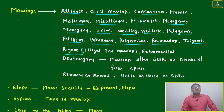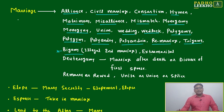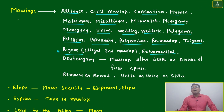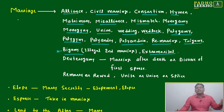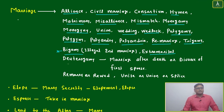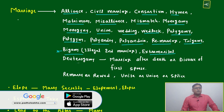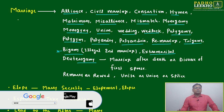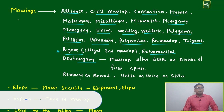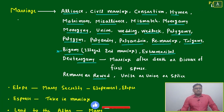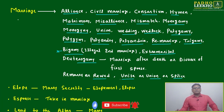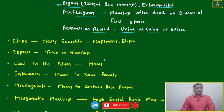Polyandry, trigamy — and then bigamy, which means an illegal second marriage. If you are doing a second marriage, that is bigamy. Extramarital means other than marriage — if you have any relation with any person outside marriage, that is an extramarital relation. Deuterogamy means marriage after the death or divorce of the first spouse. Other words like unite, union, and splice all carry the same meaning.